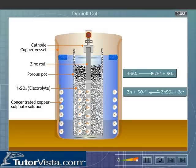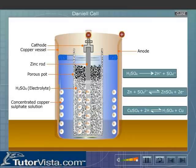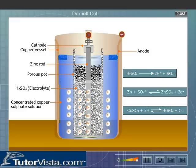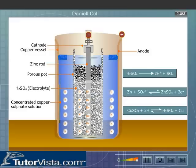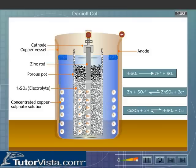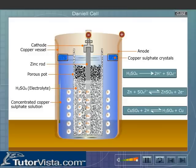The hydrogen ions move to the copper vessel, where the free ions of the copper neutralize the hydrogen ions to form hydrogen atoms. The copper vessel attains a positive charge due to a deficiency of electrons, and thus the copper vessel becomes an anode — the positive electrode. The hydrogen atoms then react with the copper sulfate solution in the copper vessel to form sulfuric acid.